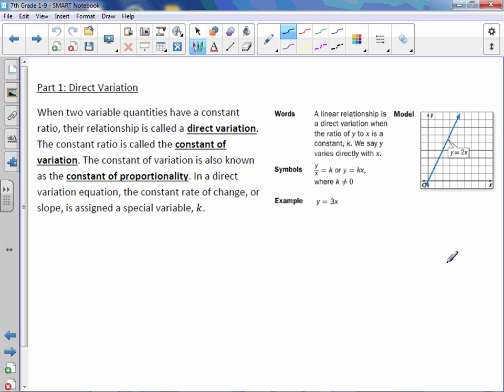The constant ratio is called the constant of variation, which is also known as the constant of proportionality. Again, because direct variation is proportional, which means it goes through the origin and it's a straight line. In the direct variation equation, the constant rate of change or slope is assigned to a special variable k.